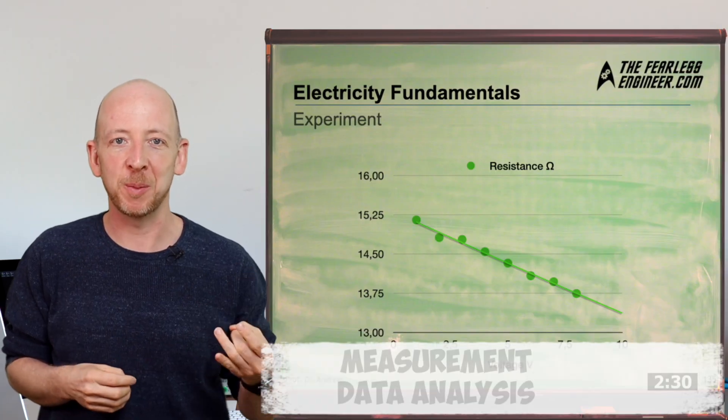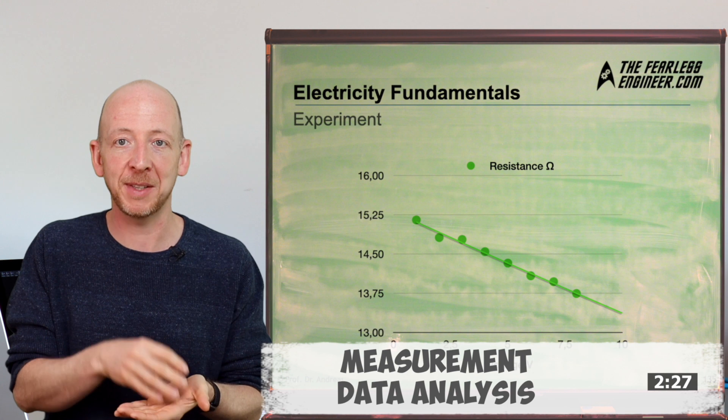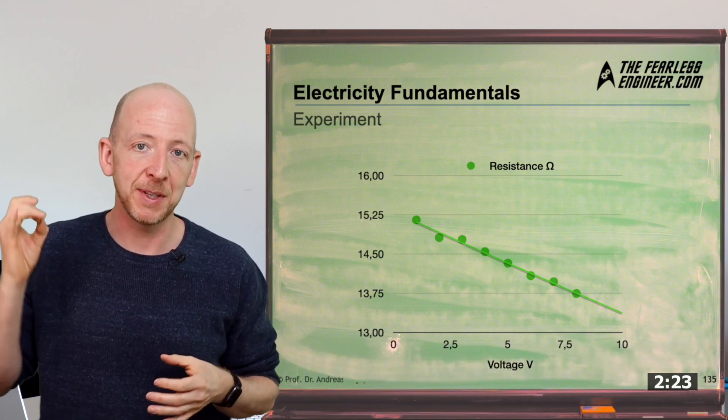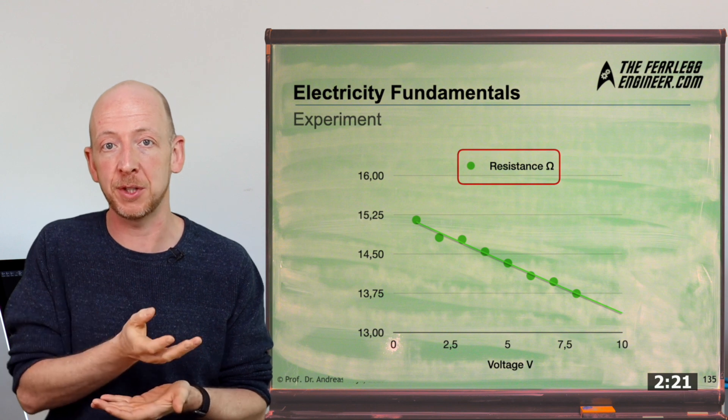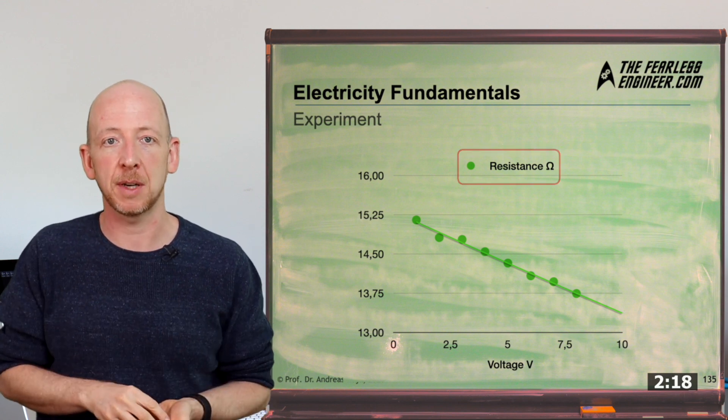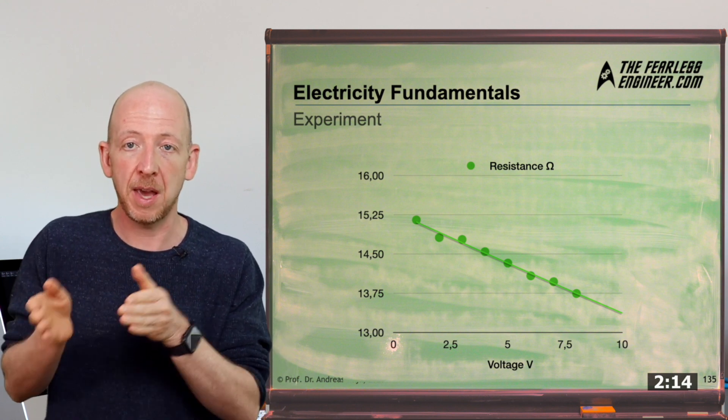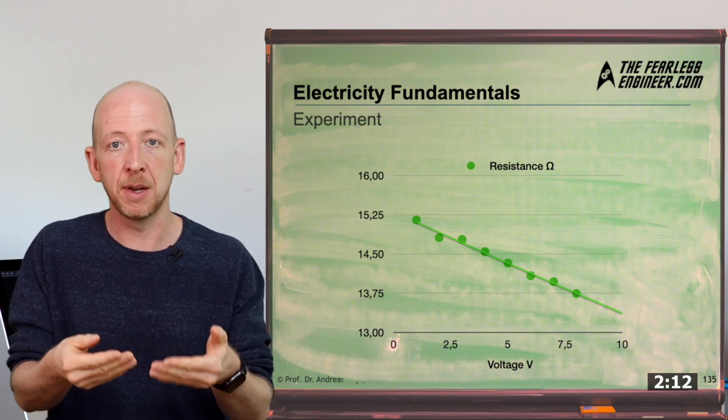So this was the experiment. If we now take a look at the measurements in a few graphs we can make several very interesting observations. In the first graph the resistance value is plotted over the voltage and each point corresponds to one of the measurements we conducted. By the way I used Ohm's law to calculate resistance both from current and voltage in the spreadsheet behind the graphic.